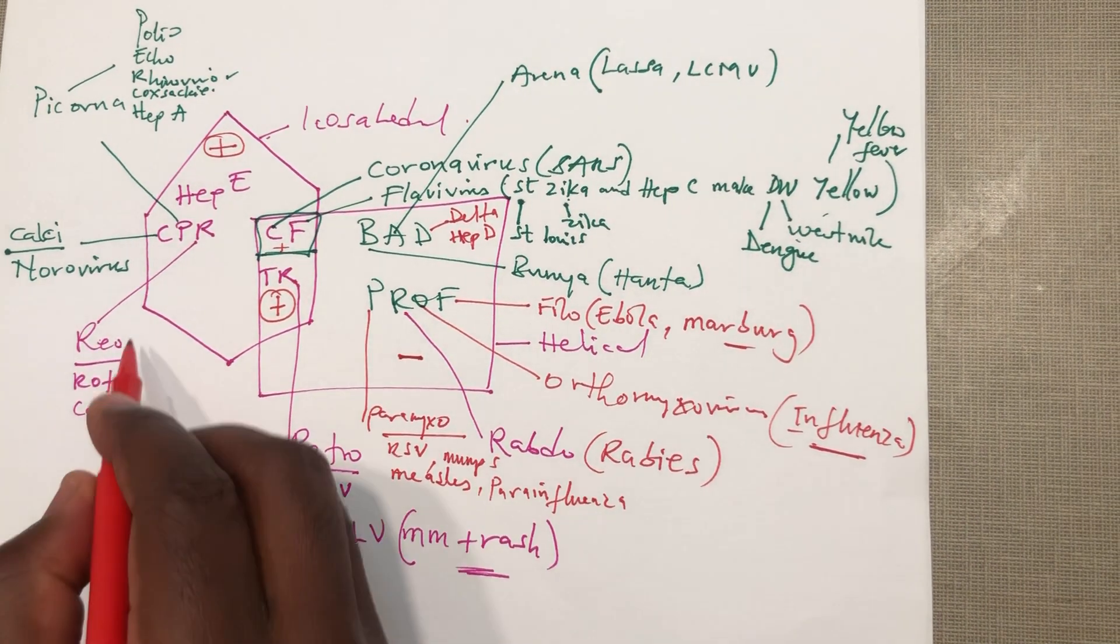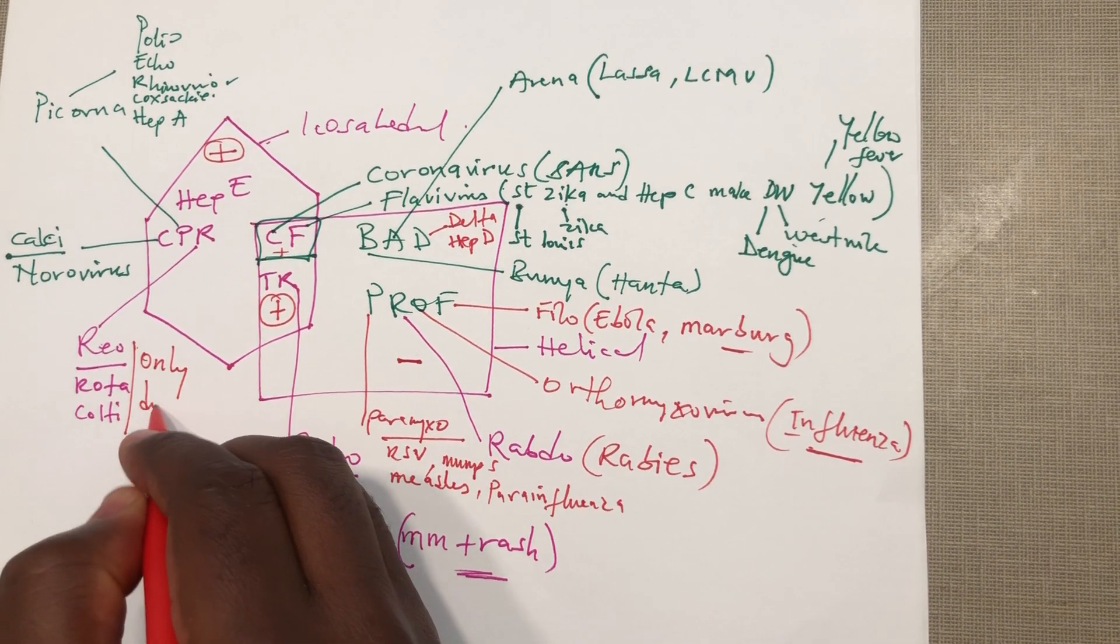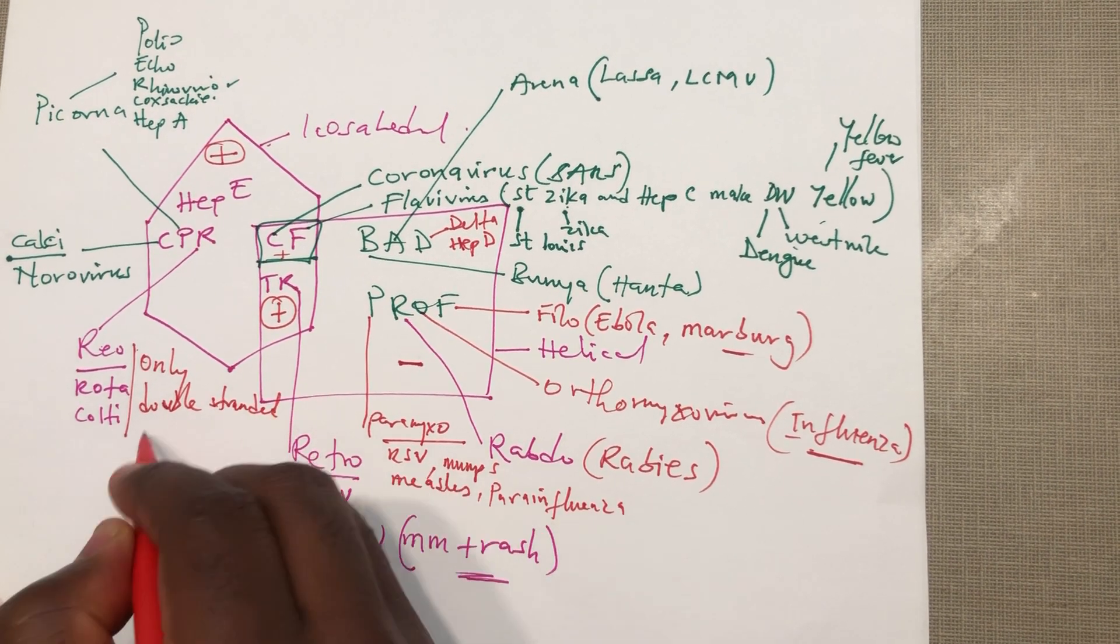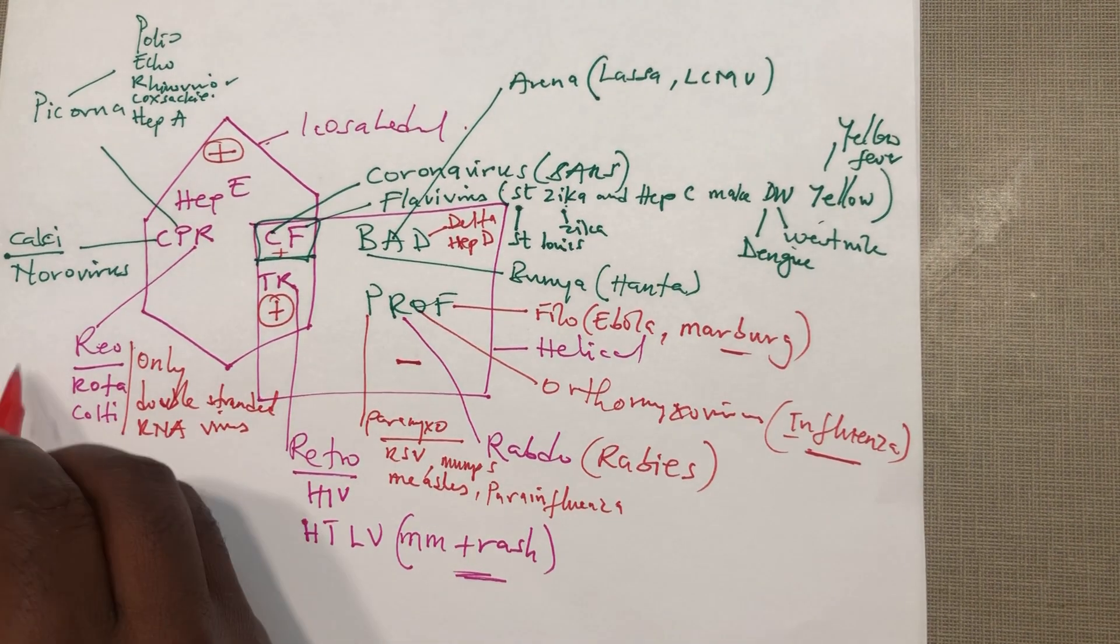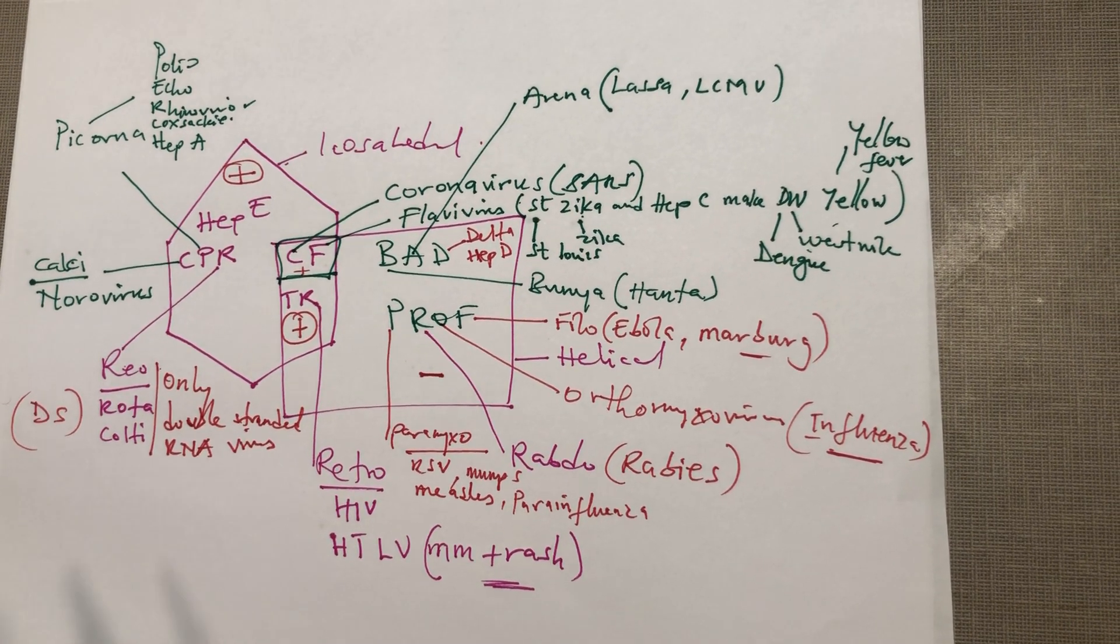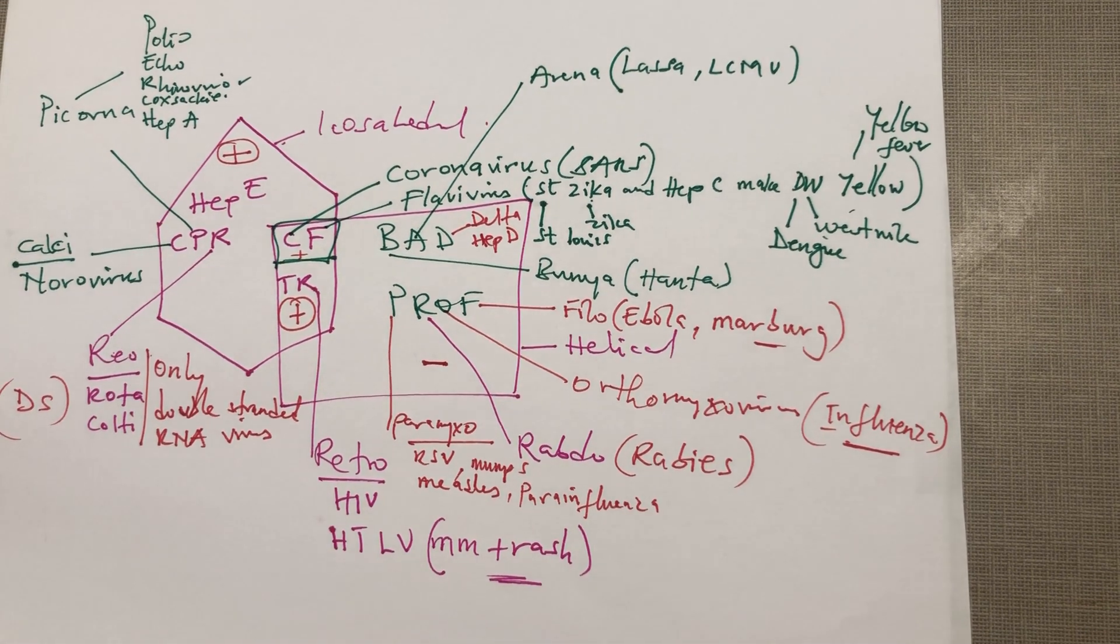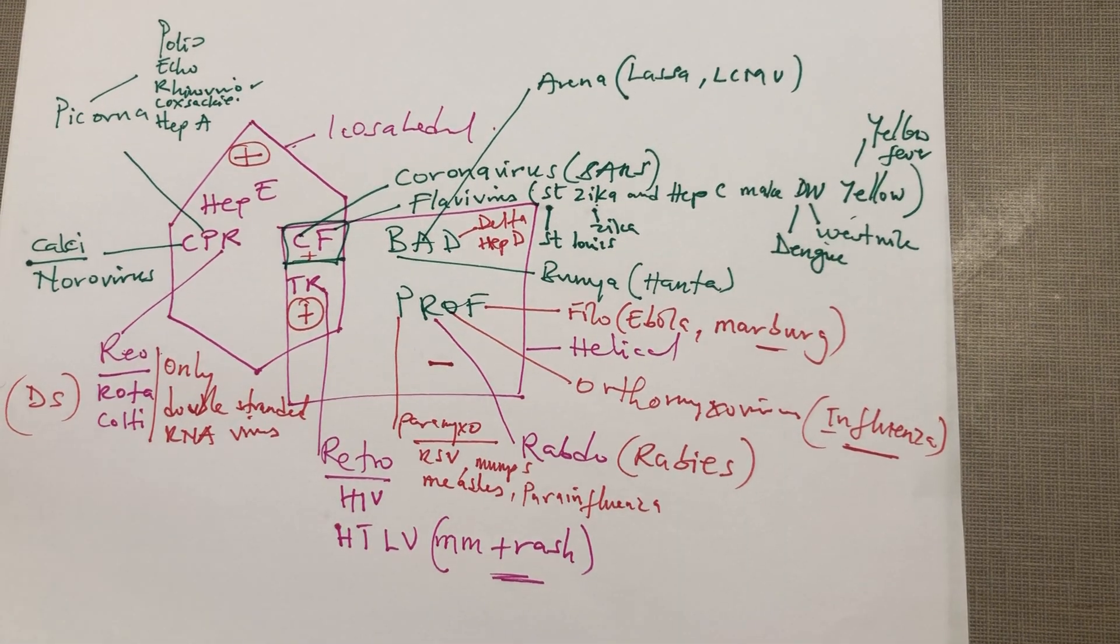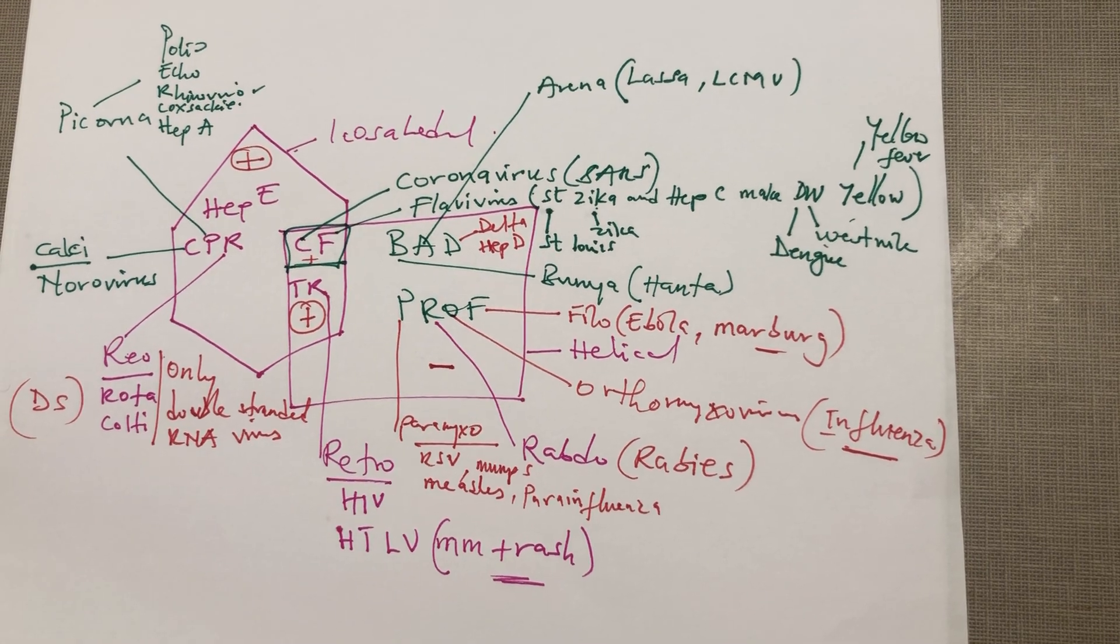One thing that you want to know about these reoviruses is that they are the only double-stranded RNA viruses. We know that all DNA viruses are double-stranded except the parvovirus. Here also, all RNA viruses are single-stranded except the reoviruses. Most of the time they test on the rotavirus so you want to be aware of that.